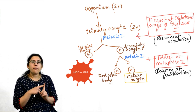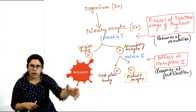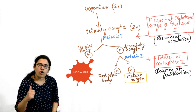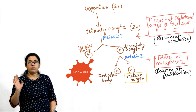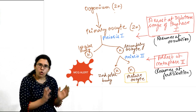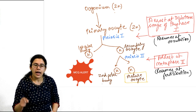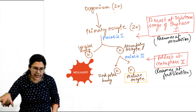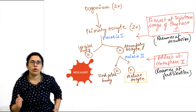The first arrest is at the diplotene stage of prophase 1 — meaning from primary oocyte (diploid) to secondary oocyte (haploid), the arrest happens at diplotene stage of prophase 1. This arrest resumes at the time of ovulation. So when a child is born, all primary oocytes in the ovary are frozen at diplotene stage of prophase 1. When puberty is attained and ovulation happens, meiosis 1 completes, secondary oocyte is formed, and it is ready to enter meiosis 2.